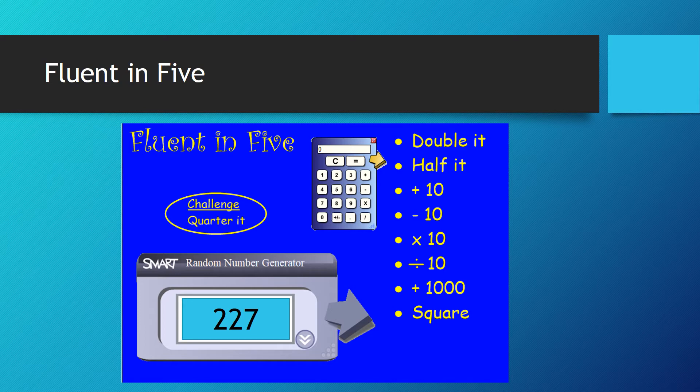Okay, 227 doubled equals 454. Half of 227 is 113 and a half. Add 10 is 237. Take away 10 is 217. Times it by 10 is 2,270. Divided by 10 is 22.7. Add a thousand is 1,227.